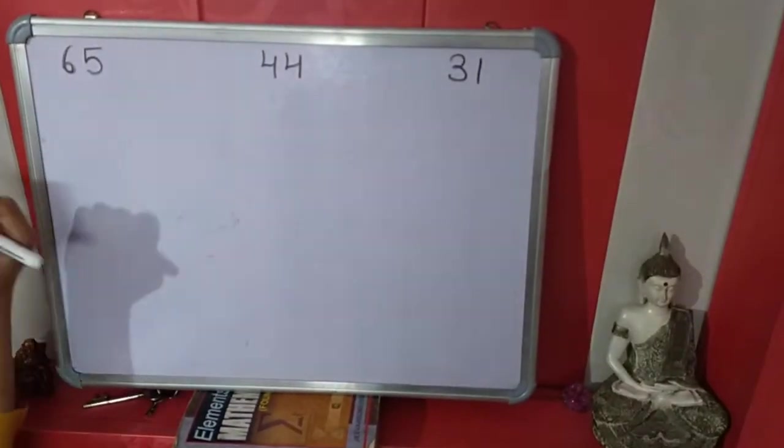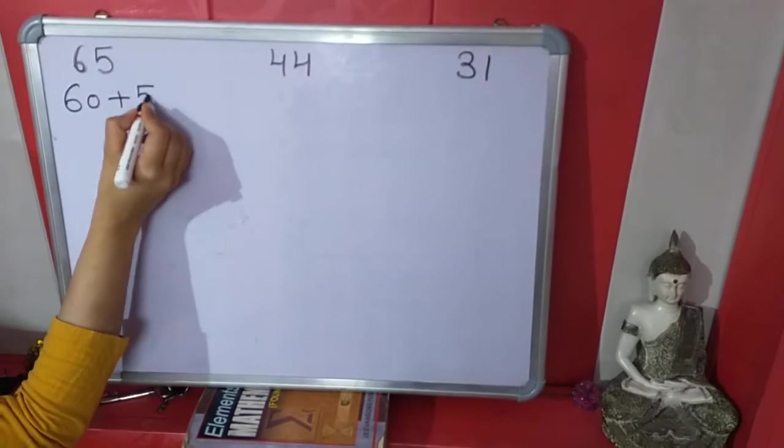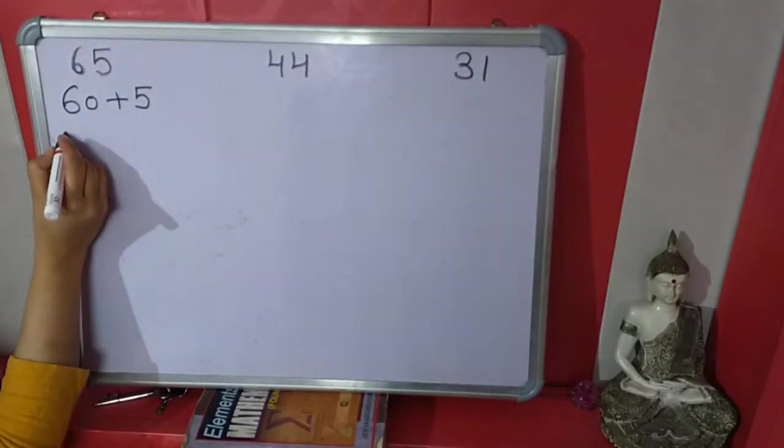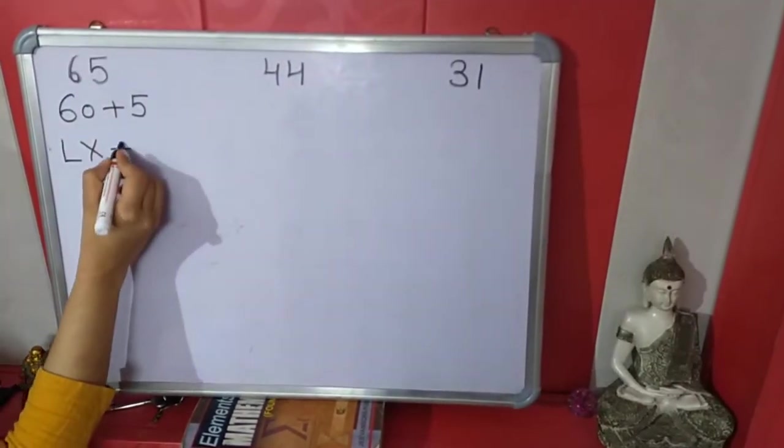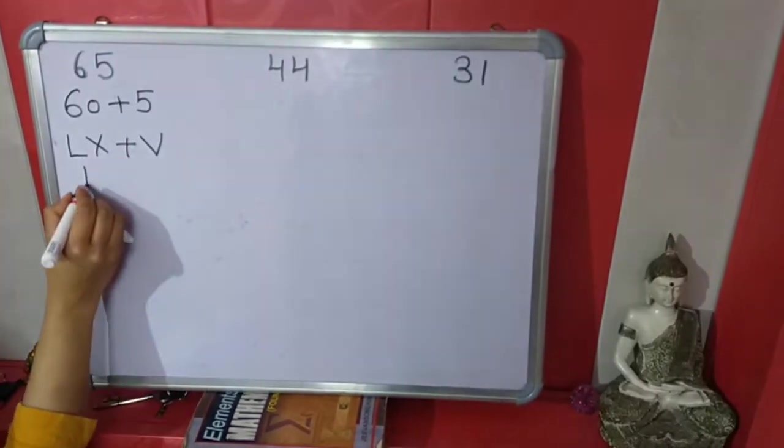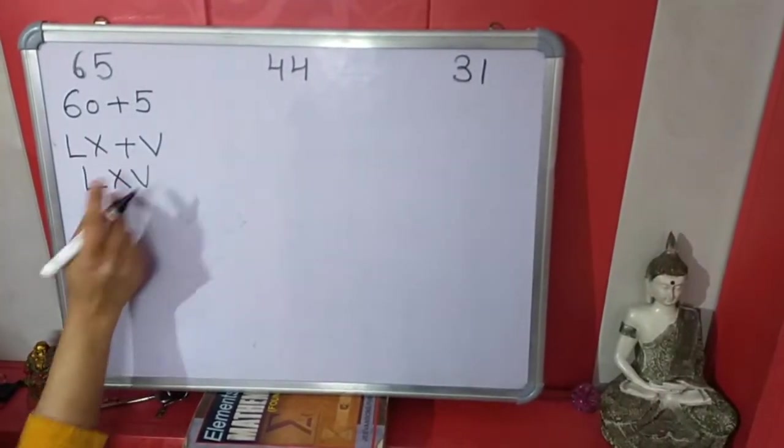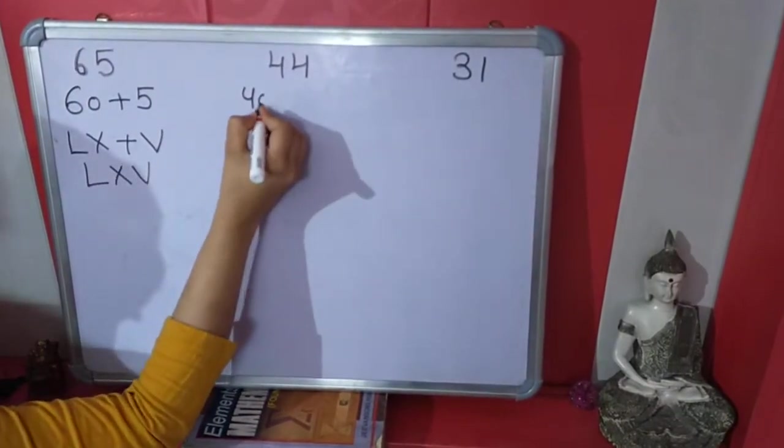Next number is 65. Again expand it, 60 plus 5. Roman number of 60 is 50 plus 10, that is LX. Plus what is Roman number of 5? V. Write together, that will be 65, LXV.